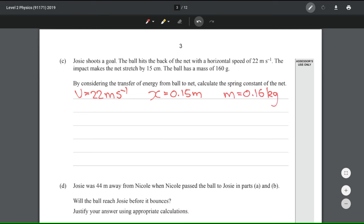In terms of energy transfers, we have the kinetic energy of the ball hitting the net and being converted into elastic potential. The equations for each are half mv squared and half kx squared.